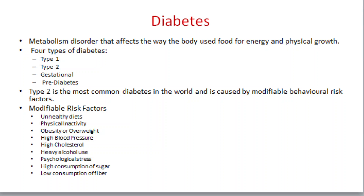Type 2 diabetes is due to insulin not working properly, and it is associated with poor eating habits and an uneven lifestyle. At present, more than 40 million people in India are already facing this problem, and year by year this number is increasing significantly. Prevention is better than cure, and this is one of the lifestyle diseases that persists for a long time, so it is important to stop unhealthy schedules and diet early.